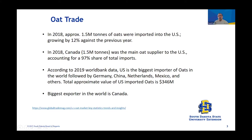In 2018, approximately 1.5 million tons of oats were imported to the U.S., a 12% increase from 2017. Canada was the main oat supplier, accounting for up to 97% of U.S. oat imports. In 2019, World Bank data shows the U.S. is the biggest importer of oats in the world, followed by Germany, China, Netherlands, and Mexico. The approximate value for U.S. imported oats was about $346 million in 2019. Canada is also the biggest exporter of oats in the world.